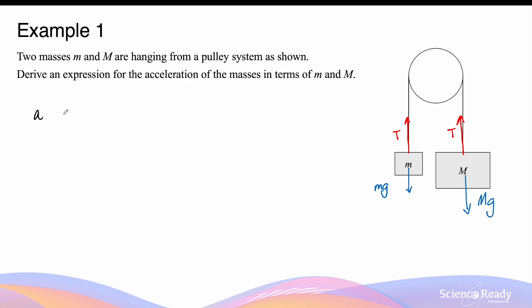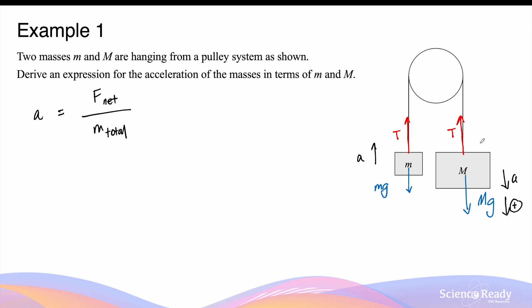The acceleration will be equal to the total net force acting on both masses — that is smaller m and big M — divided by their total mass, called M total. To find the sum of all the forces, we need to identify which direction is positive and which is negative. Let's assume capital M is the heavier mass, which means this mass will accelerate downward, while the smaller m will accelerate upwards. Let's treat the downward direction as positive, which means the upward direction is negative.